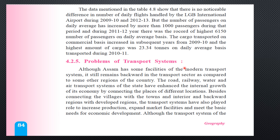Now let's discuss some of the problems of the transportation system in Assam. Although Assam has some facilities of the modern transport system, it still remains backward in the transport sector compared to other regions of the country. The road, railway, water, and air transport systems of the state have enhanced the internal growth of the economy by connecting places of different locations, as discussed in previous classes.